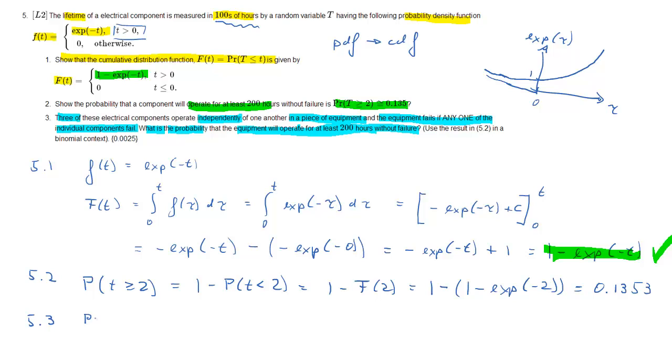And the question we now want to know is what's the probability that the equipment will operate at least 200 hours? That means all three components have to operate at least 200 hours.